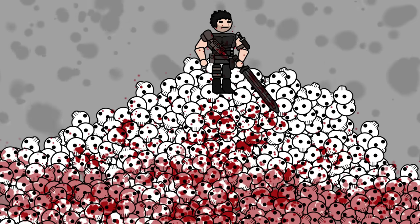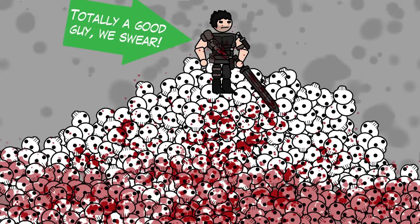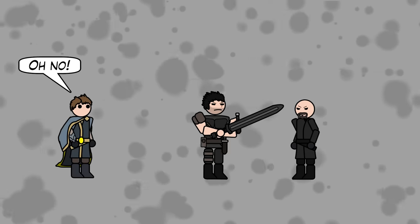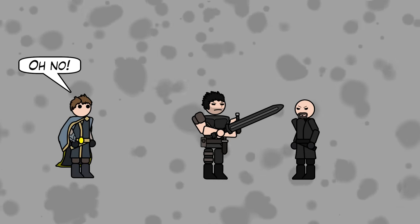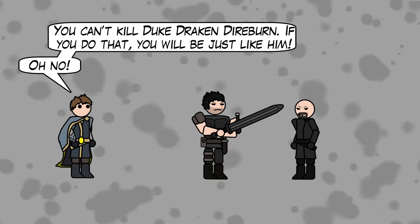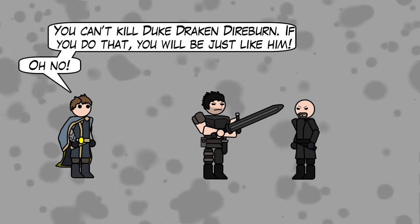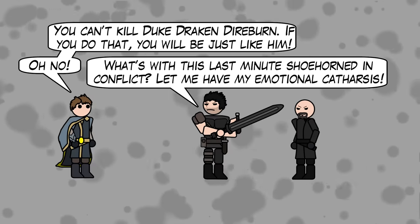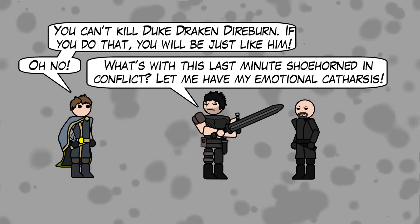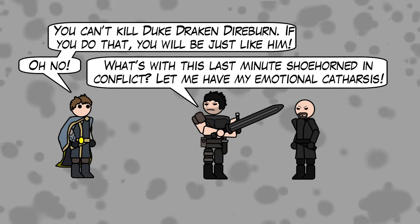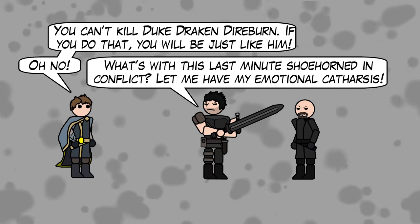But this does lead to a bit of a problem for those riding a more noble heroic avenger. How can my hero get his revenge while also keeping the moral high ground? Uh... Oh no! Says the convenient side character I've forgotten about until just now. You can't kill Duke Drakendire Burn. If you do, you will be just like him. Oh no! Says the hero in the first bout of self-awareness displayed in the whole story. Instead, the hero decides to spare the mass murdering villain that almost no one would blame him for slaying on the spot.